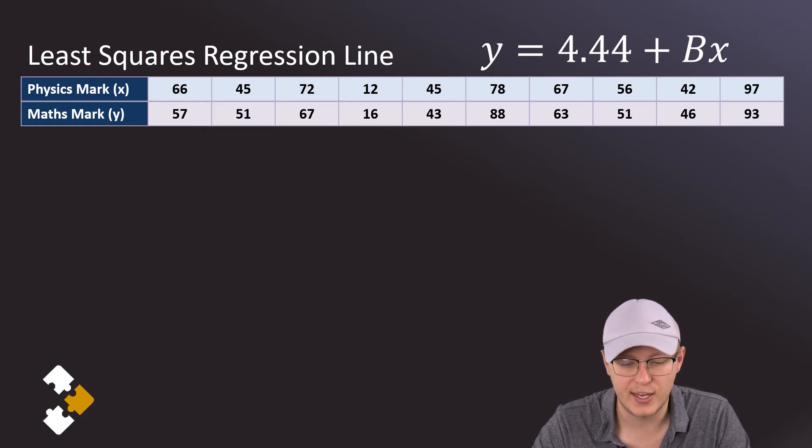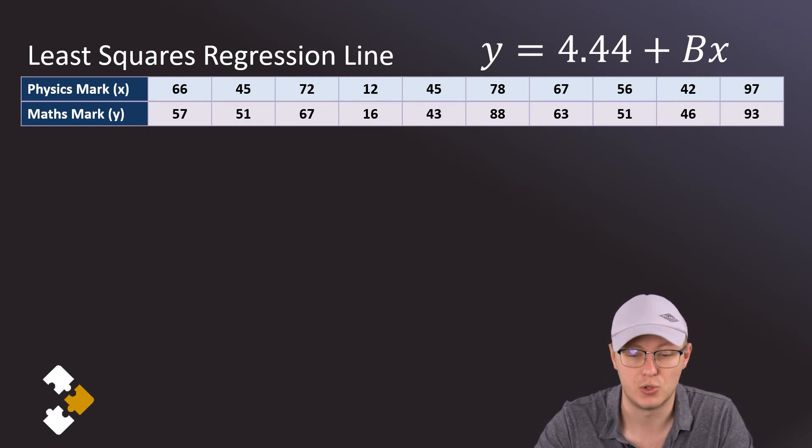Then I can do the same thing: hit ON again, go SHIFT again, go STAT again, select 5 for regression again. And now I select option 2 because I want to know what the B value is, and that's going to be the gradient of my least squares regression line. And the calculator tells me it's going to be 0.91.